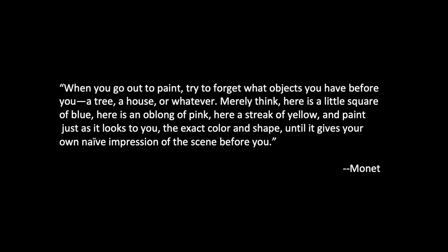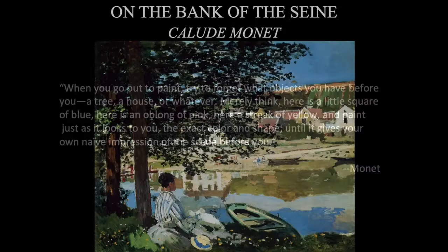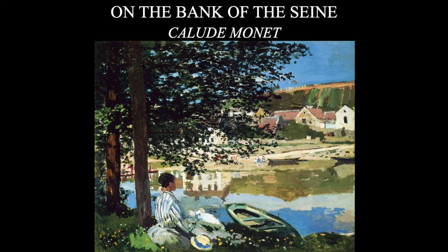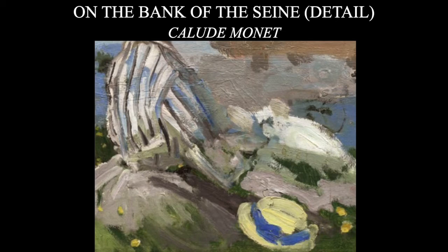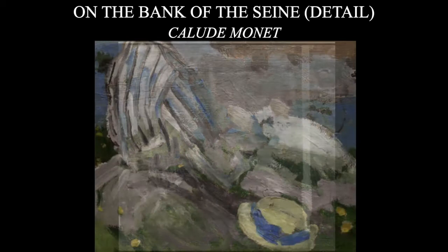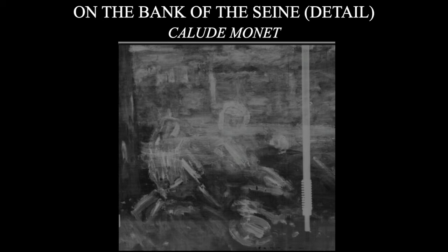Monet has a great quote: 'When you go out to paint, try to forget what objects you have before you — a tree, a house, or whatever. Merely think here is a little square of blue, an oblong of pink, a streak of yellow, and paint just as it looks to you, the exact color and shape, until it gives your own naive impression of the scene before you.' Even in X-rays of his paintings, we can see the brush strokes he's creating.